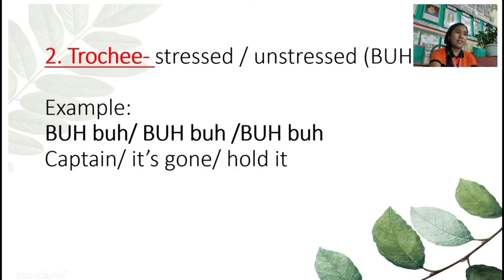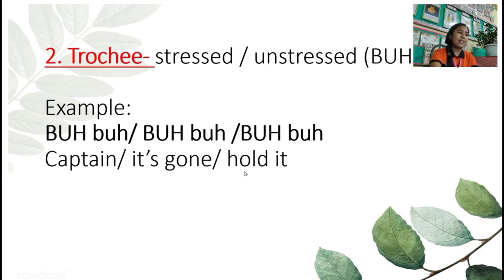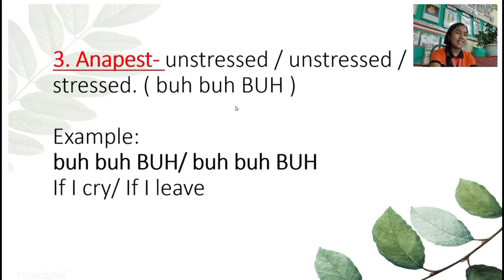Second one is trochee — stress, unstressed. Example: CUP-chain, IT's-gone, HOLD-it. That is what we call trochee: stressed and unstressed.